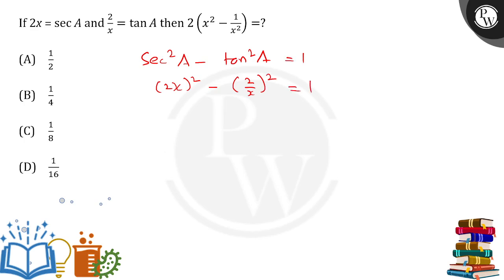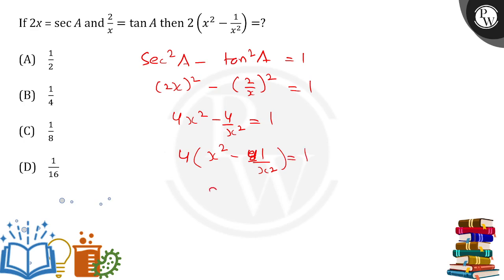So this gives us 4x squared minus 4 upon x squared equals 1. Taking 4 common over here, we are left with x squared minus 1 upon x squared equals 1 over 4.